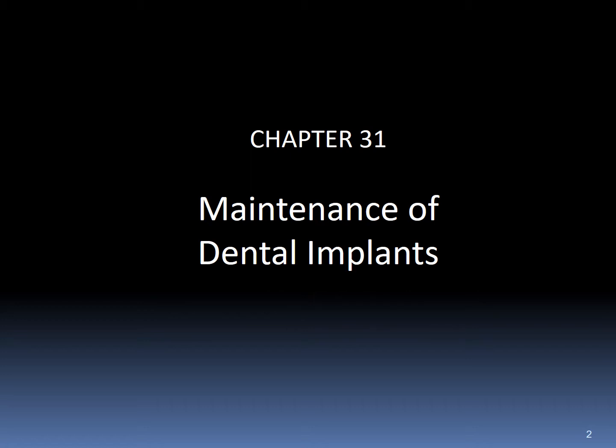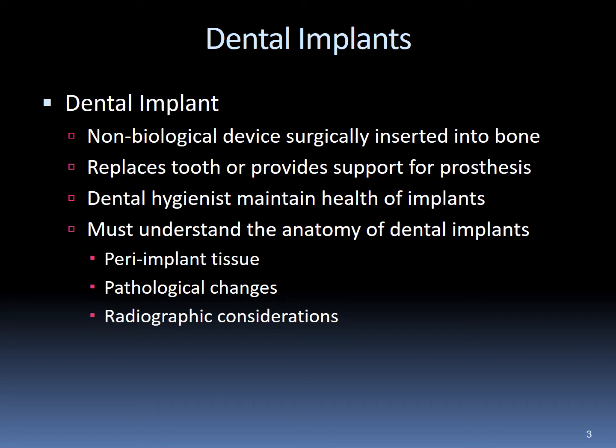Chapter 31: Maintenance of Dental Implants. The components of a dental implant consist of non-biological devices surgically inserted into the bone that replace a tooth or provide support to a dental prosthesis. The dental hygienist maintains the health of dental implants and must understand the anatomy of dental implants, the condition of peri-implant tissue, the pathological changes that threaten the integrity of the implant, and the survival of the epithelium. They must also be aware of any radiographic findings and considerations for evaluating the health of an implant.